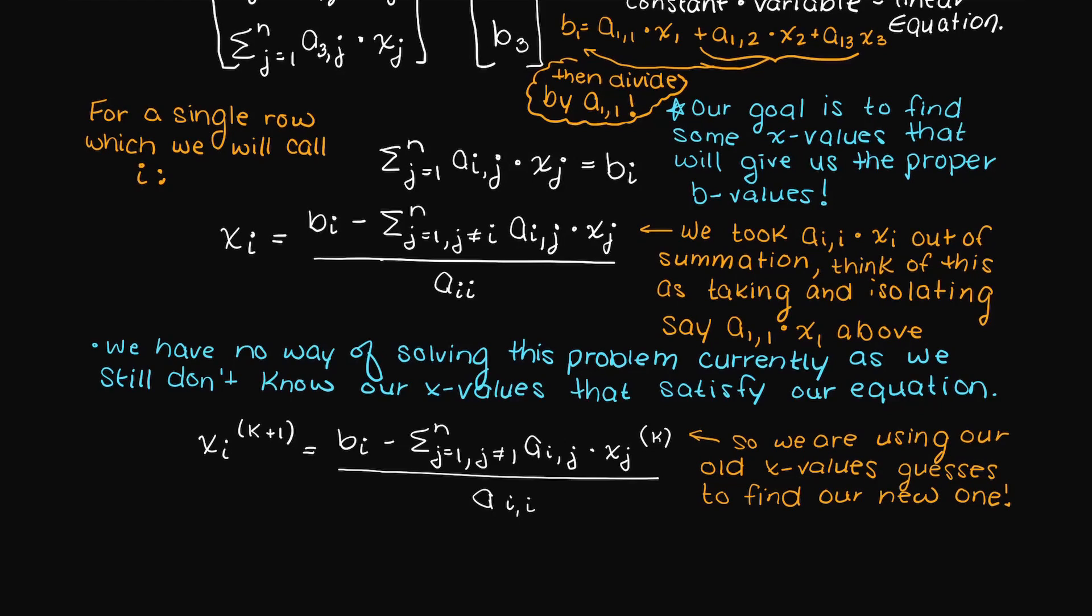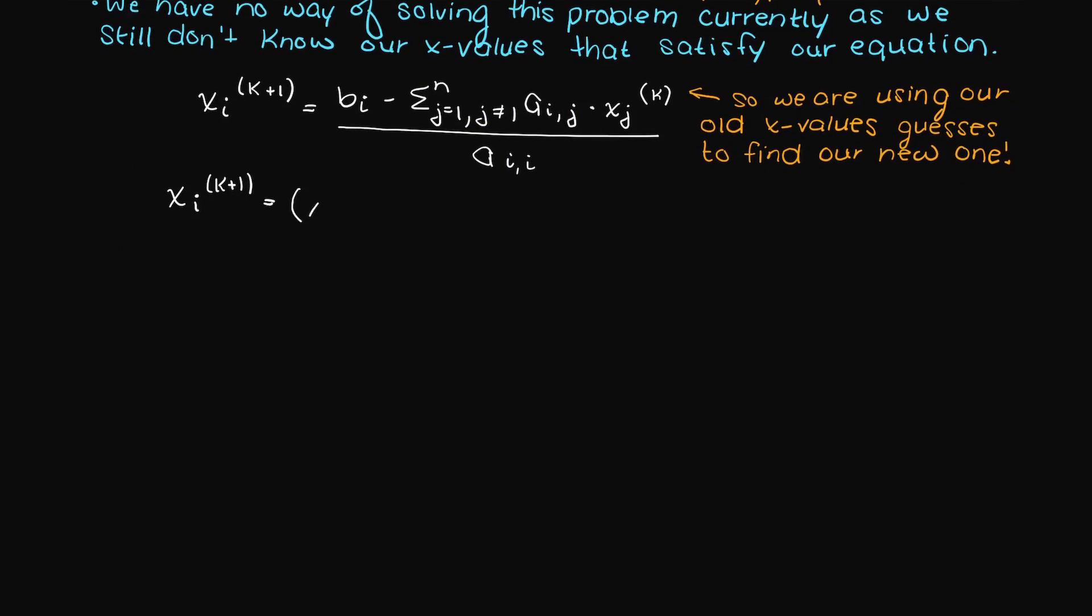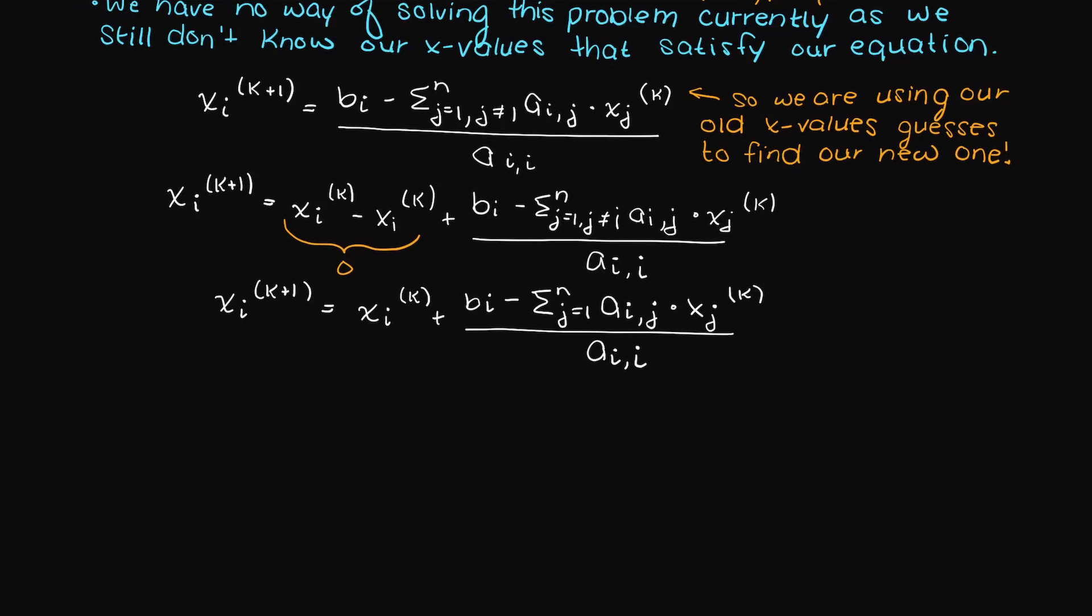However, we can further simplify this equation as well. Using our initial guess of xi subtracted by itself, which would just be 0, we can bring this right one into our summation sign, and then this whole term simply becomes our original matrix of A, since the only value we were initially missing has just been replaced.